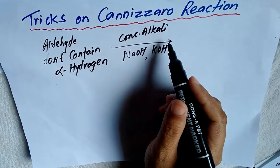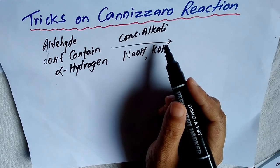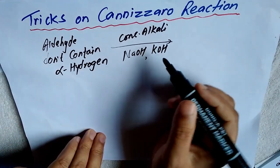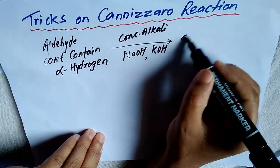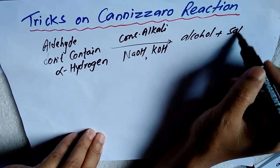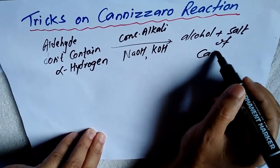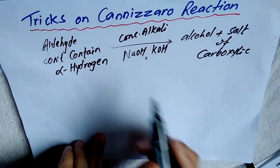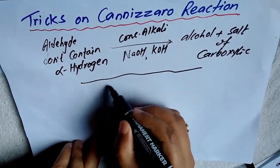Disproportionation means oxidation-reduction — the carbon undergoes both oxidation and reduction to give alcohol and the salt of carboxylic acid. This reaction is called the Cannizzaro reaction.